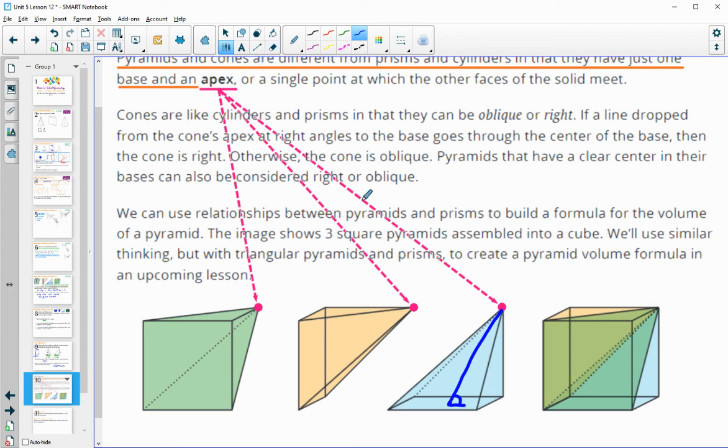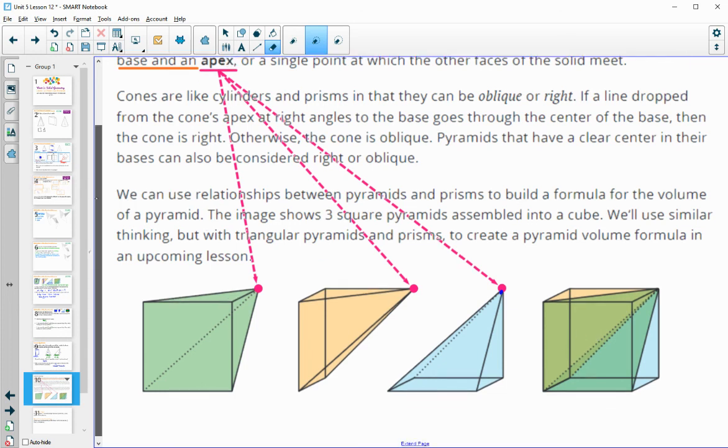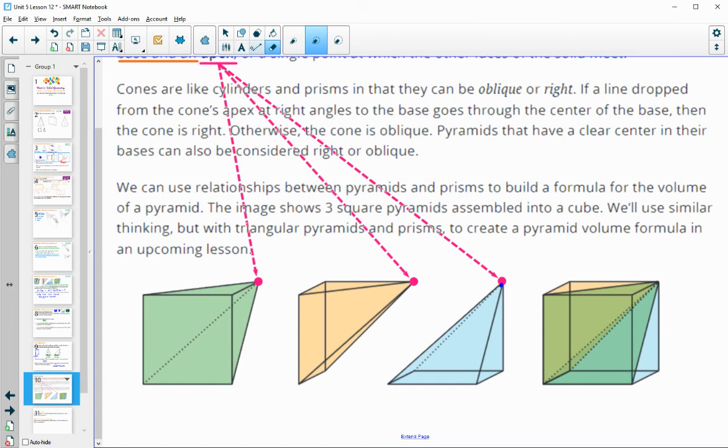So the relationship between pyramids and prisms, we looked at to try to build a formula for volume. We looked at these three square pyramids and talked about how they created a cube. And then in an upcoming lesson, we're actually going to come up with the formula. We hypothesized what the formula was today, but we're going to come up with what the actual formula is in an upcoming lesson.